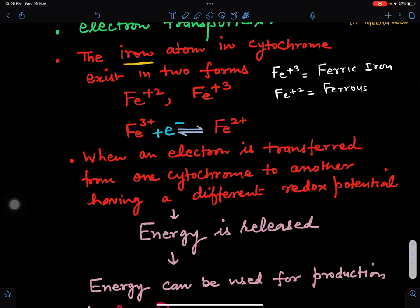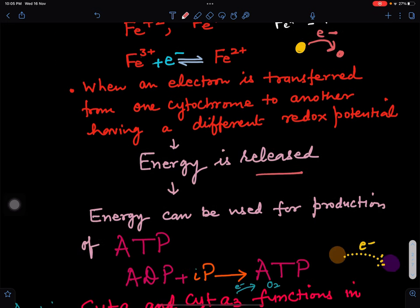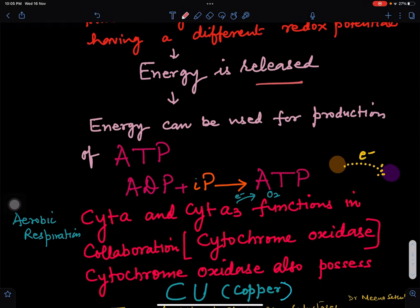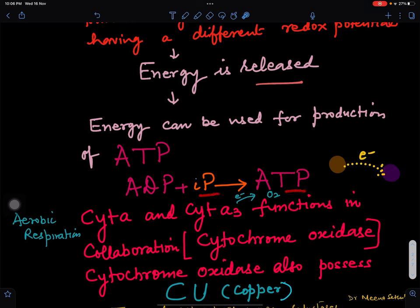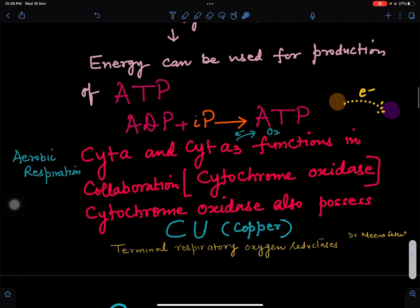When an electron is transferred from one cytochrome to another, each may have a different redox potential. During that process, when an electron is released from one compound to another, there may be an energy difference. That energy is released and can be used for the production of ATP. ATP is produced from ADP (adenosine diphosphate) and inorganic phosphate — ATP, adenosine triphosphate, is also called the energy currency of the cell, produced inside the mitochondria.